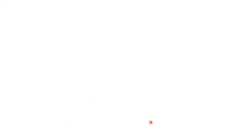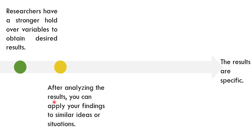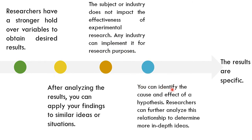Advantages of experimental research: Results are specific. Researchers have stronger control over variables to obtain desired results. After analyzing the results, you can apply your findings to similar ideas or situations. The subject or industry does not impact the effectiveness of experimental research — any industry can implement it. You can identify the cause and effect of a hypothesis, and researchers can further analyze this relationship to determine more in-depth ideas.